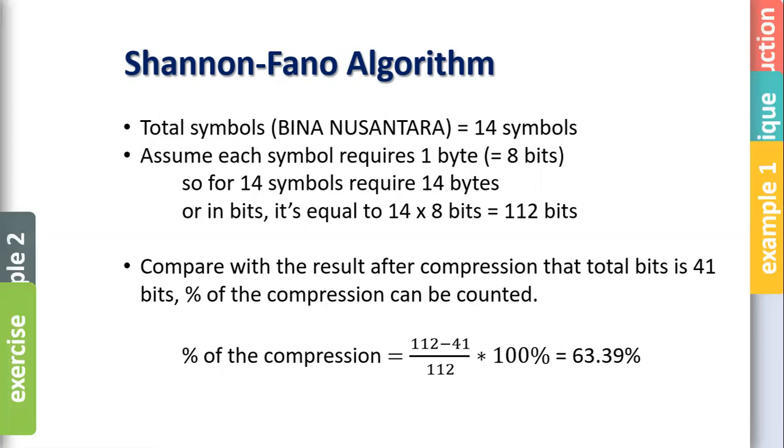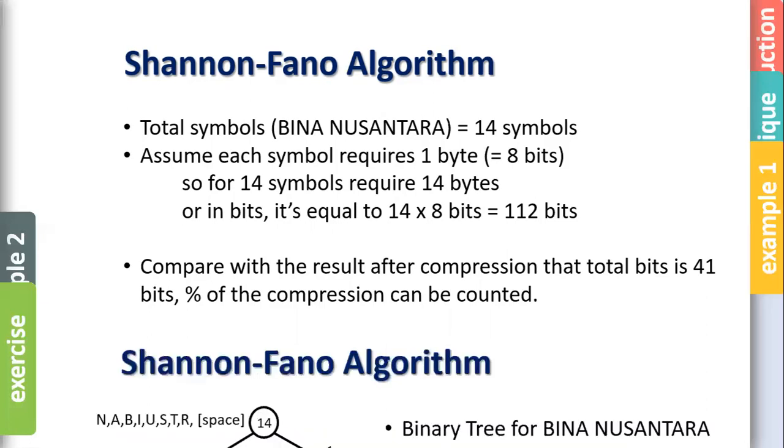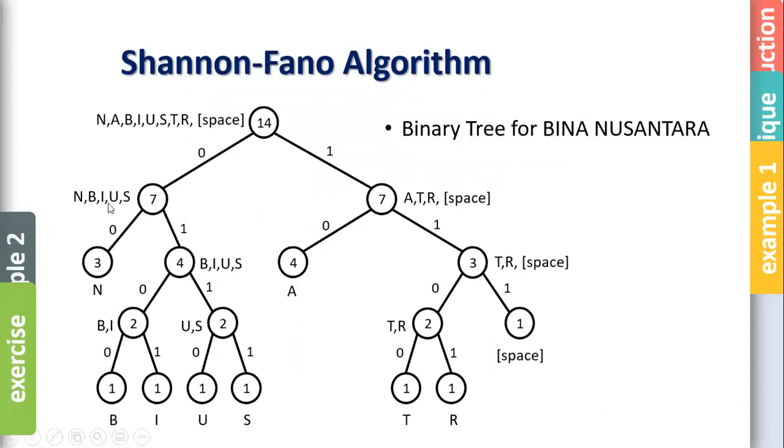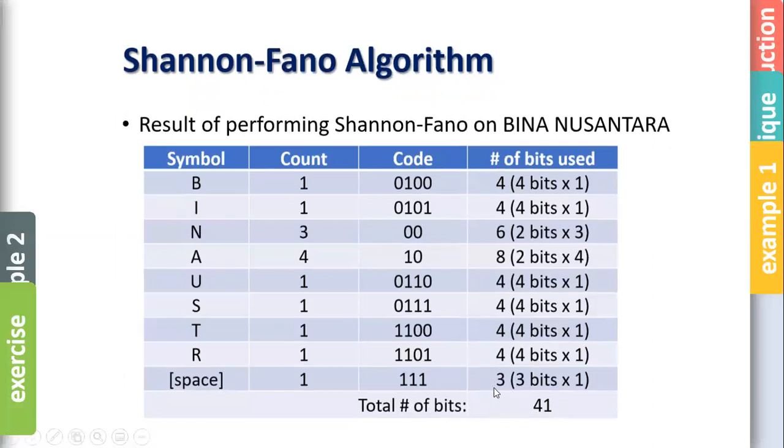So later on, when they want to read it, they need to convert back. But with that code, it's easy to understand. So, but we have a different cut. In the previous, we cut A and N. How about we split separate like this? N with B I U S. A with T R space. You got 7, 7. Then you get this kind of tree. The tree is different, right? So previously, N with A. Stop there. But here, on the left, it's going down until here. On the right, also going down until here. So you get this code. When you count, still 41. So the result is the same in these examples.